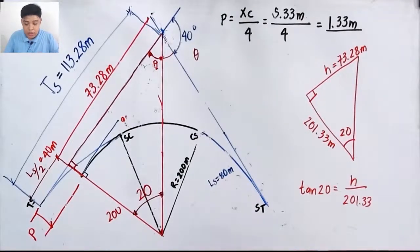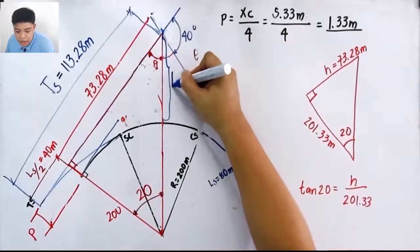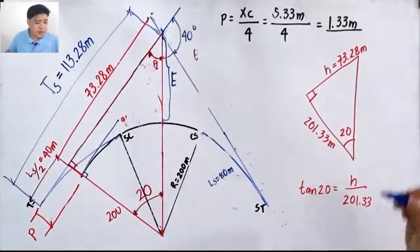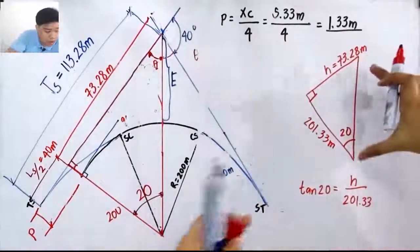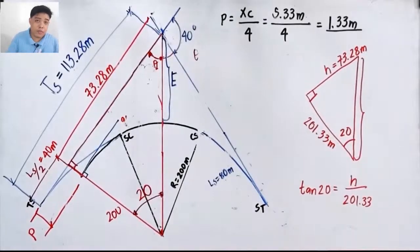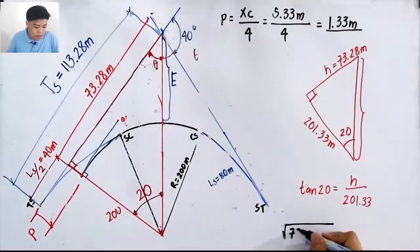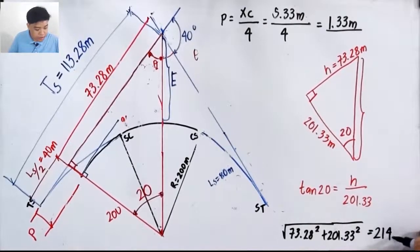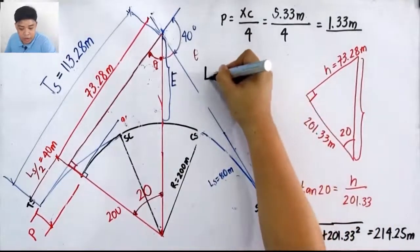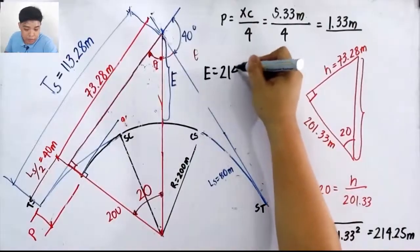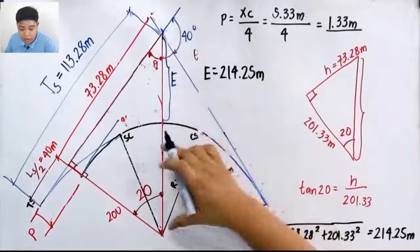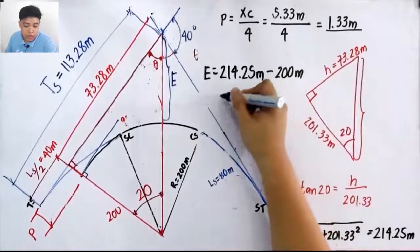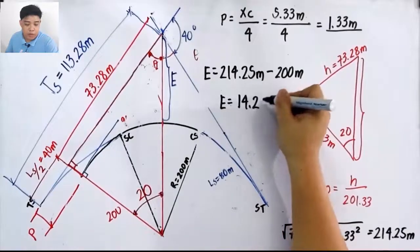Finally, the external distance e is the length from the point of intersection to the circular curve. The hypotenuse of the right triangle is solved using the Pythagorean theorem: √(73.28² + 201.33²) = 214.25 meters. The external distance e = 214.25 − 200 (the radius) = 14.25 meters.